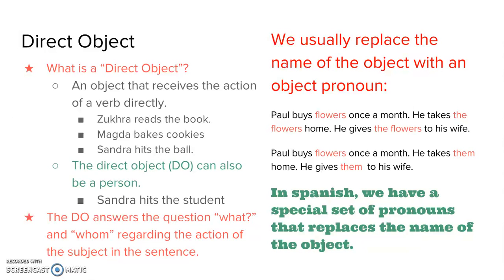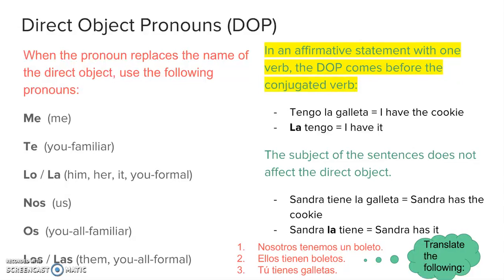In Spanish, we have a special set of pronouns that replaces the name of the object. These are the direct object pronouns: me, te, lo, la, nos, os, los, las.